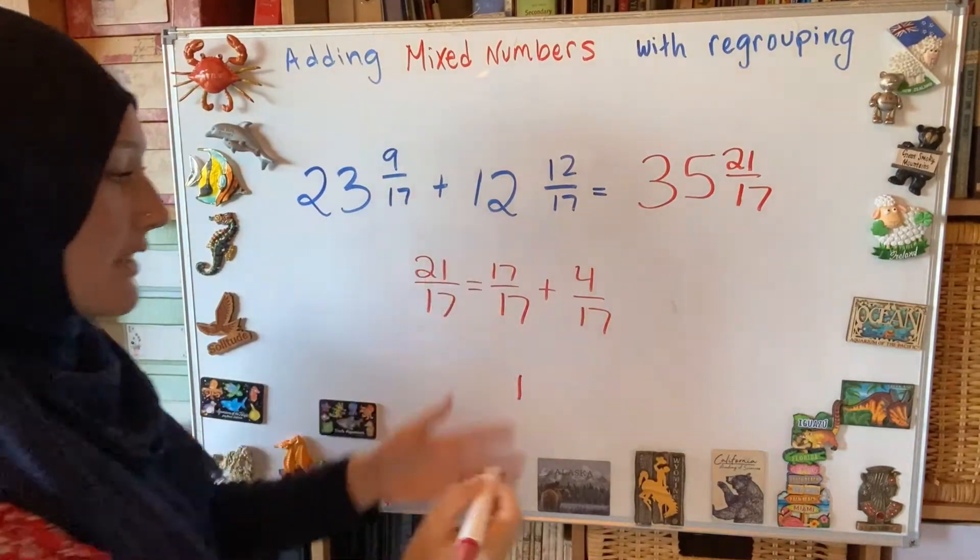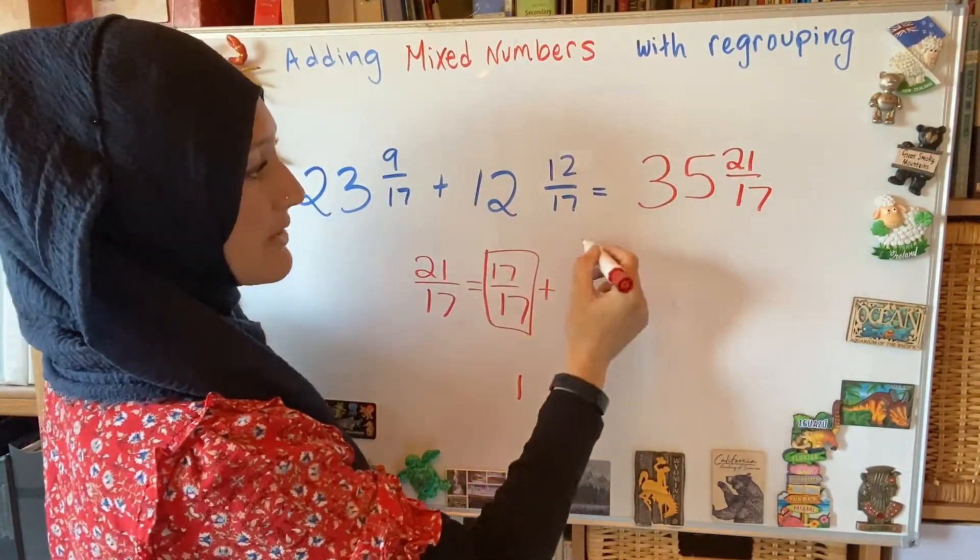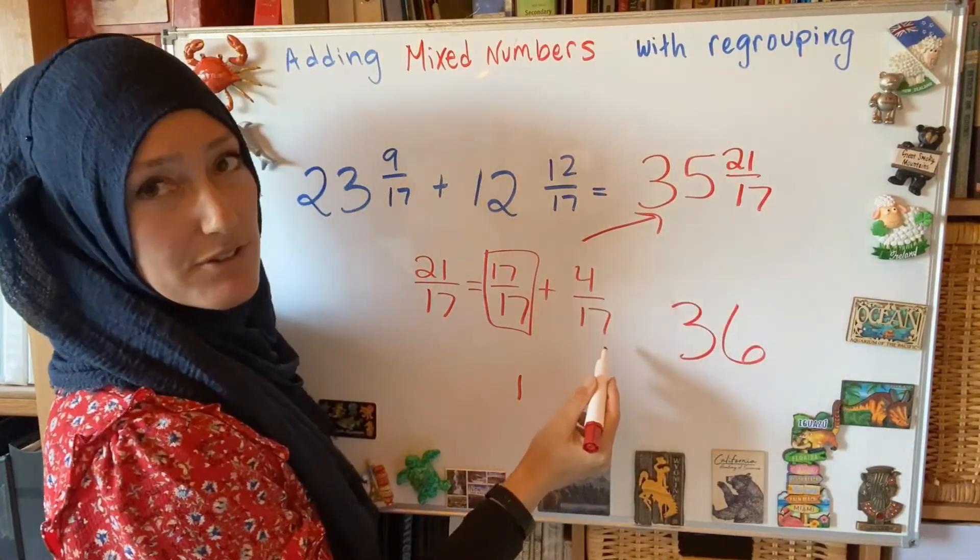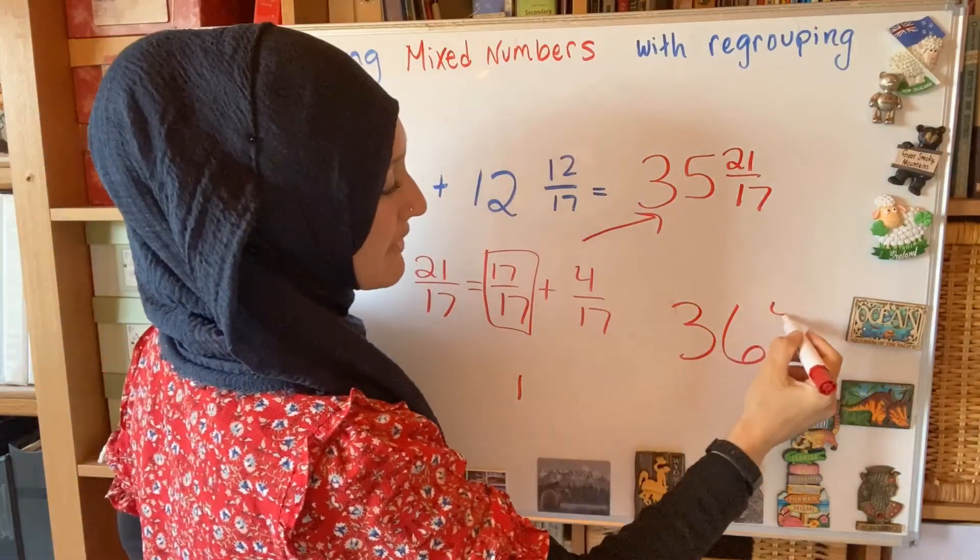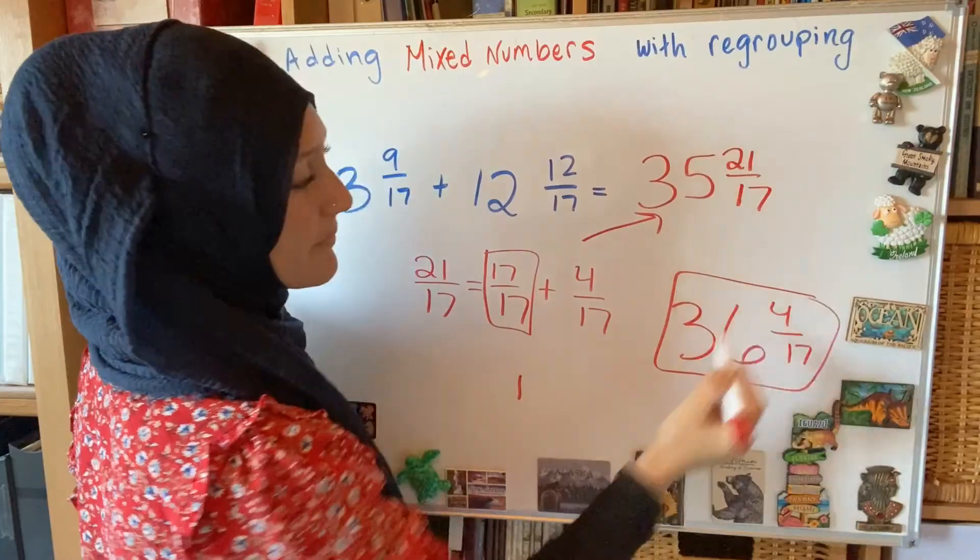And then I think, okay, so I'm going to give this 1, I'm going to give that 1 to my whole amount. So now I will have 36, and my leftover is 4 seventeenths. So that's how you do it.